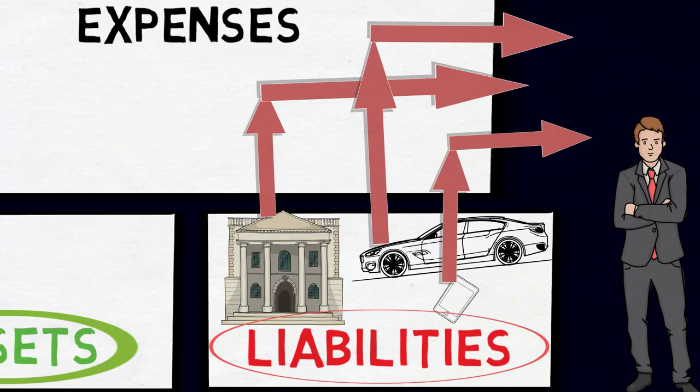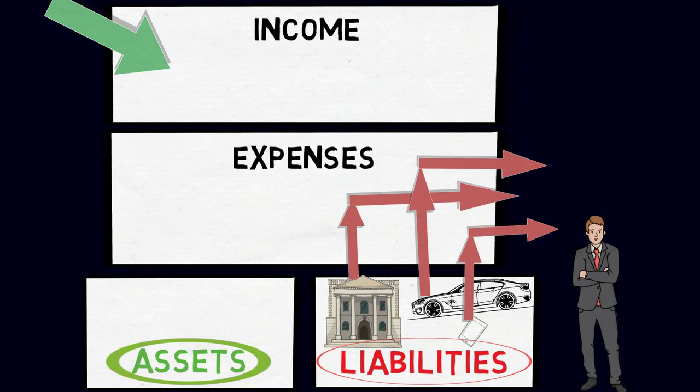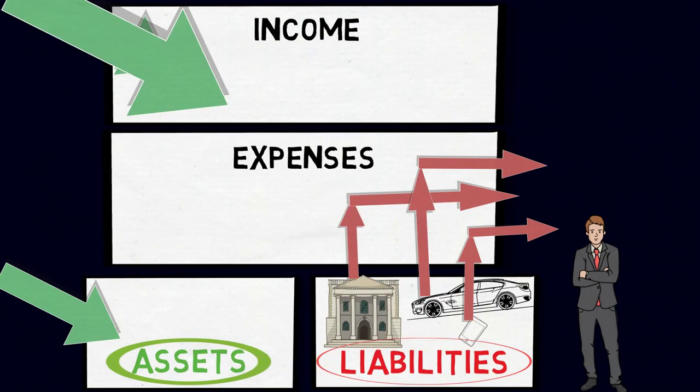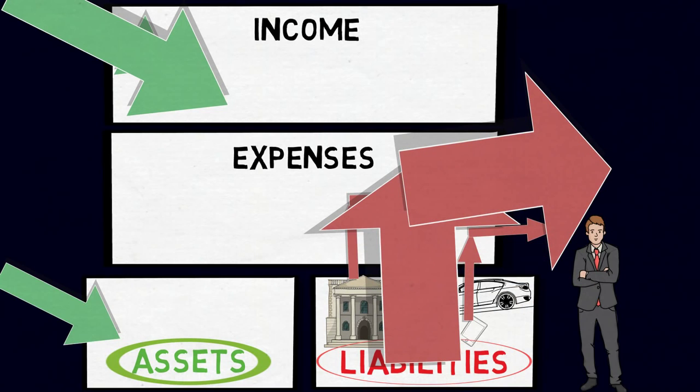In essence, unless you make a paradigm shift about what you do with your money, which is to buy actual assets, no matter how much income you earn from your job, you will just match it with your liabilities and expenses. Your friends might admire your iPhone 6 and you might look rich, but you will never actually be rich.